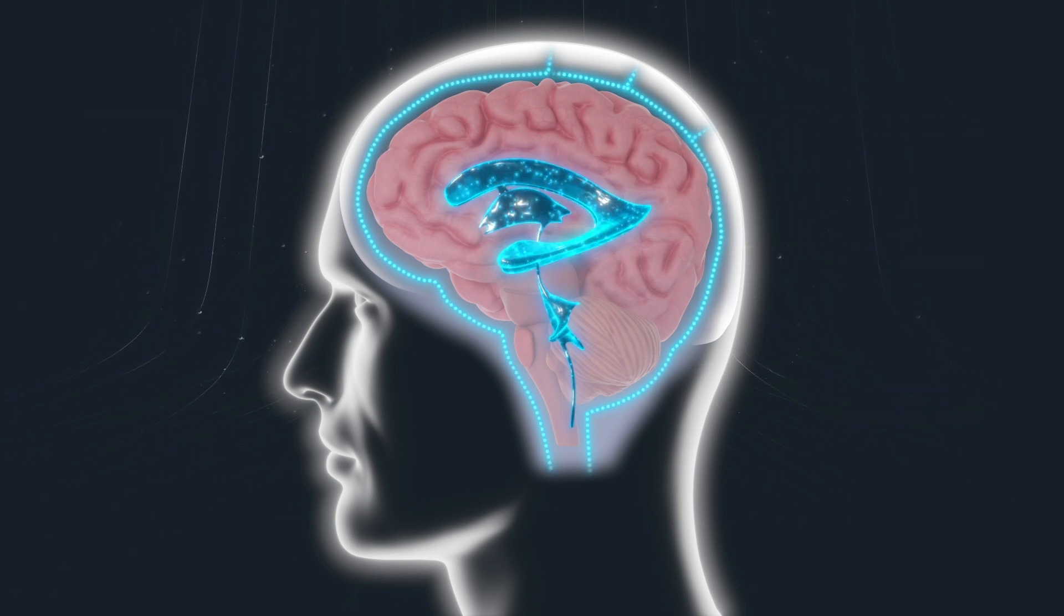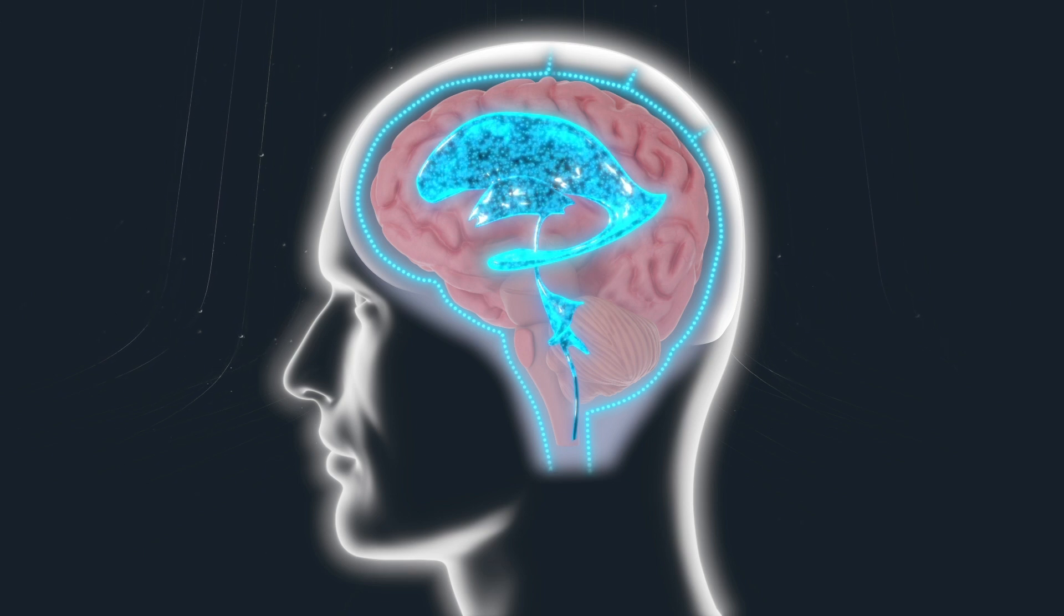Hydrocephalus occurs when there is an imbalance between the amount of fluid that is produced and the rate at which it is absorbed. As the fluid builds up, it causes the ventricles to enlarge and the pressure inside the head to increase.